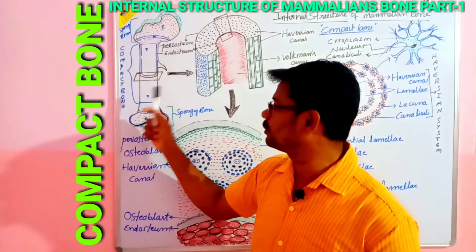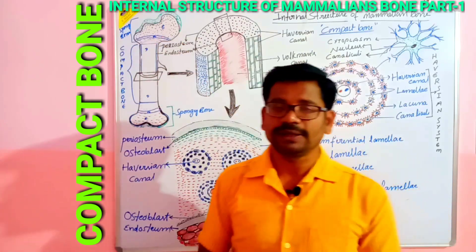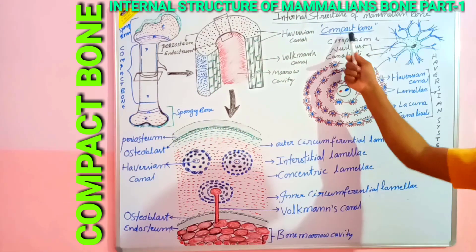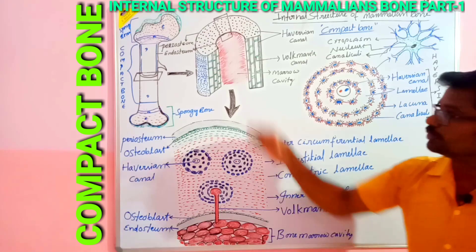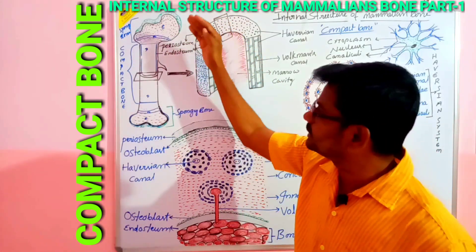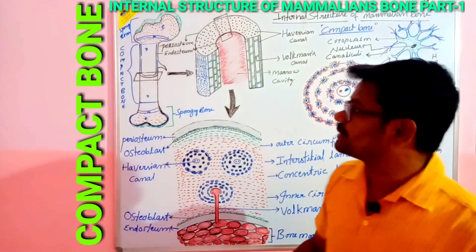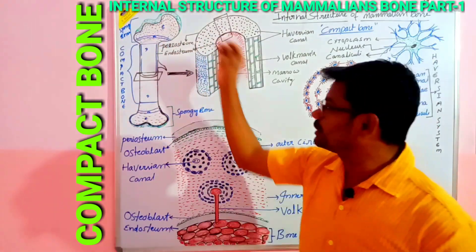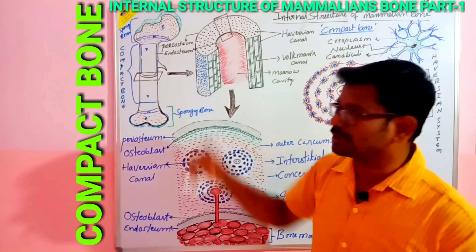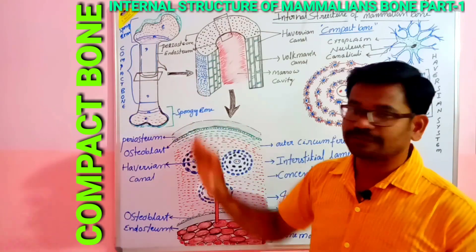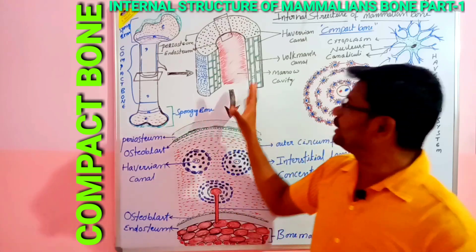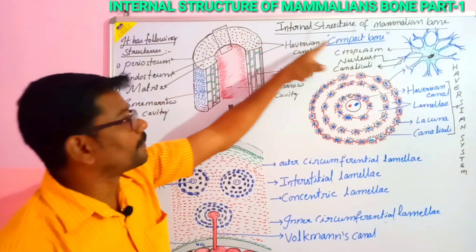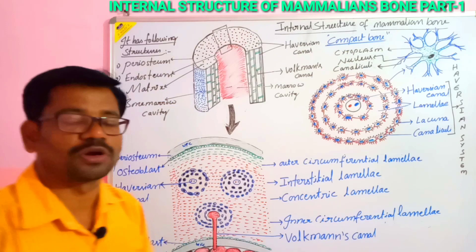So spongy bone is responsible for hemopoiesis — production of blood cells. The diaphysis, or shaft, of the long bone is called compact bone. It is highly mineralized. Compact bone is responsible for the storage of fat due to the presence of the yellow bone marrow cavity. Now let us look at the internal structure of mammalian bone, specifically the compact bone.